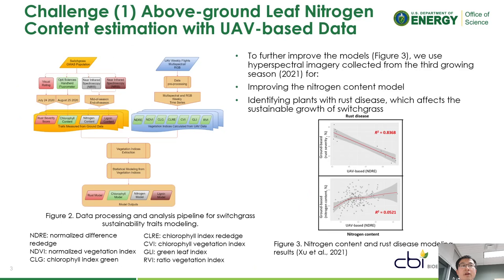To further improve the models, we need to overcome two challenges. One, identifying plants with Ross disease, which affects the sustainable growth of switchgrass, and two, we need to improve the model accuracy for nitrogen content.